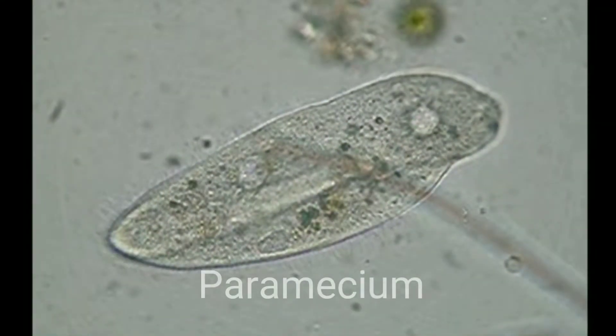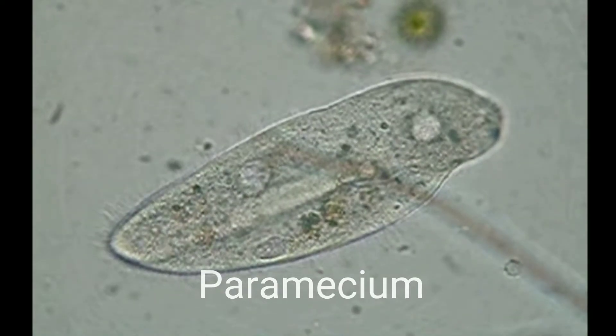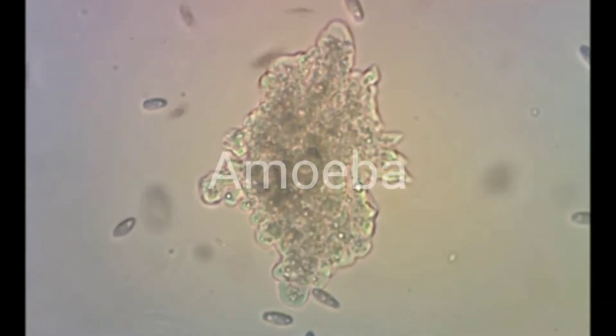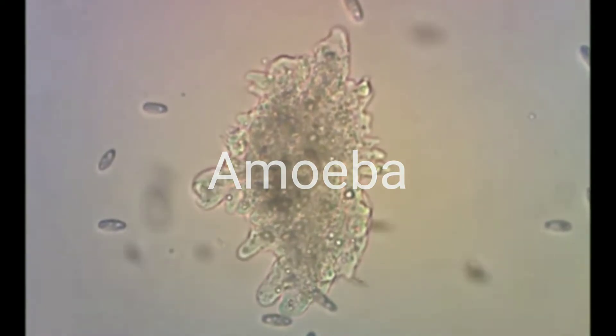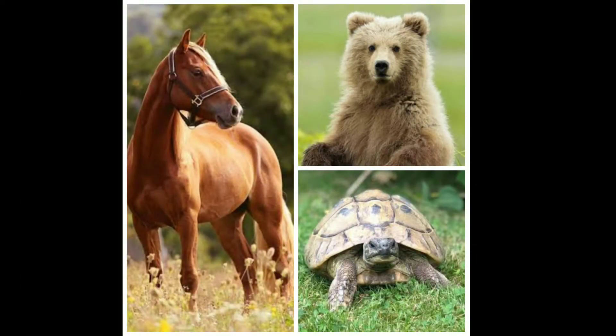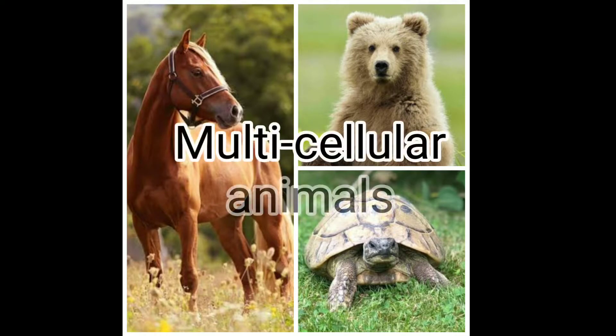You will see the continuously moving amoeba. The paramecium is also a unicellular animal like the amoeba. A horse, a bear, and a tortoise are multicellular animals.